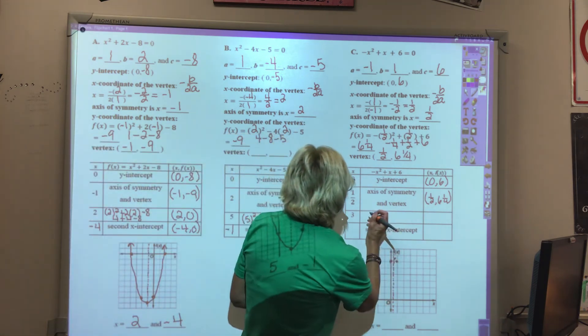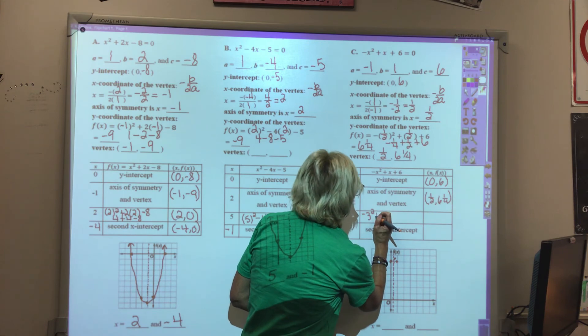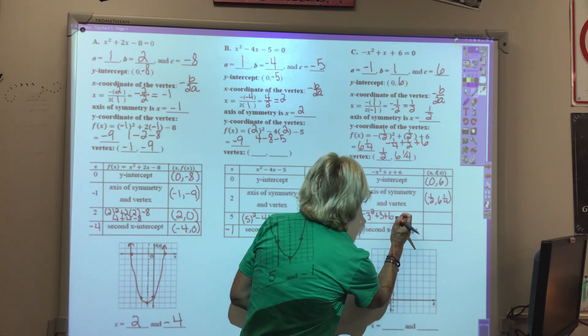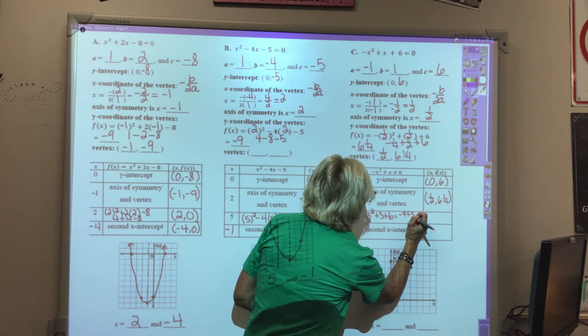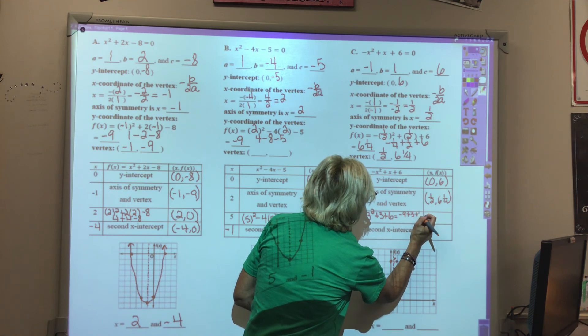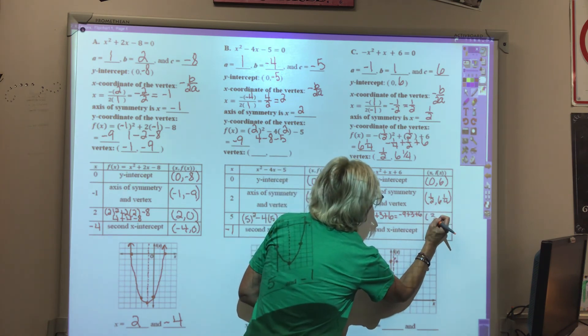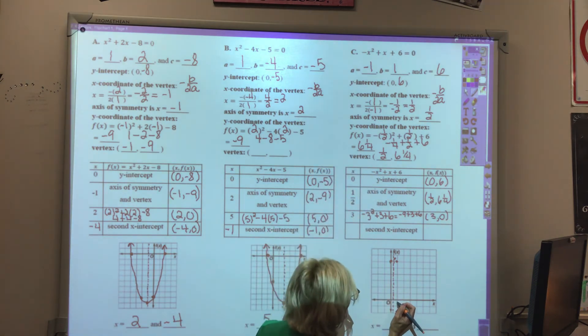We're going to plug in negative 3 squared plus 3 plus 6. That would be negative 9 plus 3 plus 6, which will give us 0. So we have a point at 3, 0. We're going over 2 and 3 fourths.